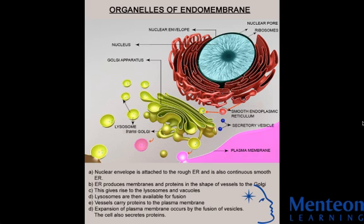Here in the diagram, the endoplasmic reticulum makes membranes and proteins. In the shape of vesicles, they travel to the Golgi, and this gives rise to lysosomes and vacuoles that come out from the trans side of the Golgi. Lysosomes are then available for fusion with the plasma membrane, expansion of the plasma membrane happens, and proteins can be secreted out.